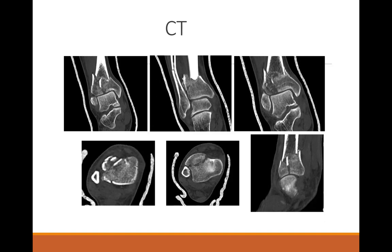Where does that piece of cortical bone come from that's stuck in that sagittal split? We pulled it out at the time of surgery. I'm not sure how you could treat that conservatively without it falling back into varus position — there's no option for non-operative treatment on that one.